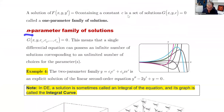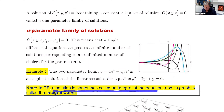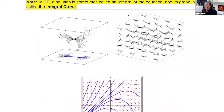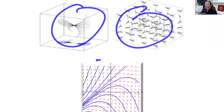Next: the n-parameter family of solutions. When you solve an integral, you add plus C — those are the parameters. A two-parameter solution has c₁ and c₂. When we draw curves, we get different curves depending on the parameters. An important note: in differential equations, a solution is sometimes called an integral of the equation, and its graph is called the integral curve. Because of the constant C, we don't have only one curve — we have several.